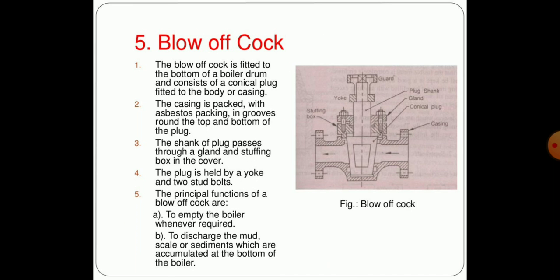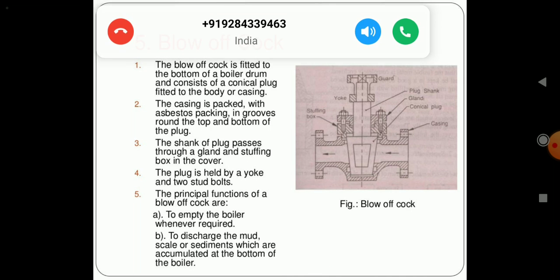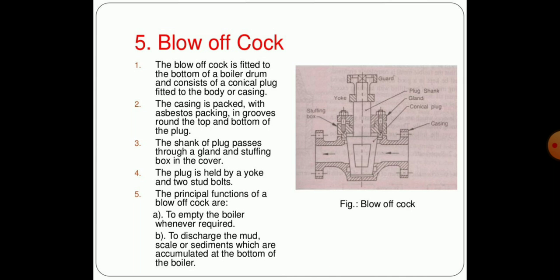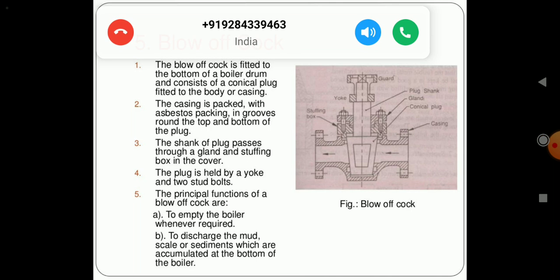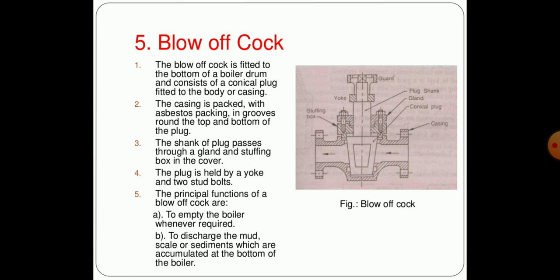There is an arrangement of blow-off cock. The blow-off cock is fitted at the bottom of the boiler drum and consists of a conical plug fitted to the body of casting. The casting is packed with asbestos packing which goes around the top or bottom of the plug. The shank of the plug passes through the gland and stuffing box in the cover. The principal functions of the blow-off cock are to empty the boiler whenever required and to discharge the mud, scale, and sediment accumulated at the bottom of the boiler.